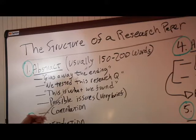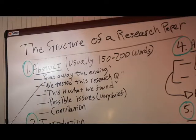So the abstract, which is usually 150 to 200 words, varies depending on who you're writing the paper for. The abstract gives away the ending. It tells the reader what you found. You say stuff like, we tested this research question, and this is what we found, and here are some possible issues very briefly, and here is our contribution. You do this all in one sentence each for each point, 150 to 200 words. Some places allow an abstract of 300 words, but typically 150 to 200 is more common.